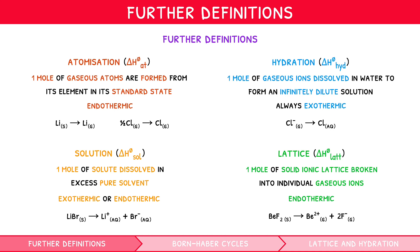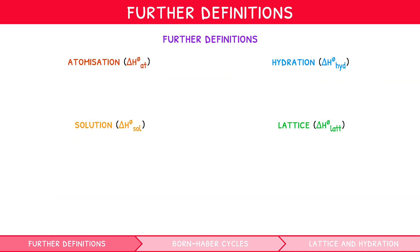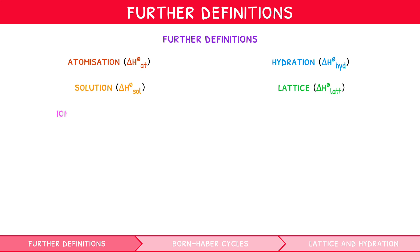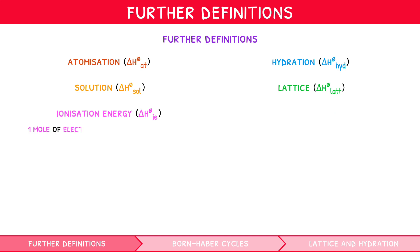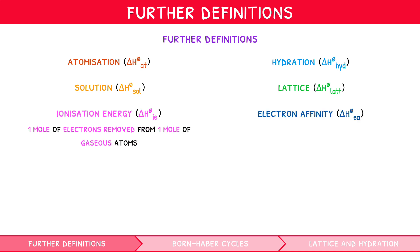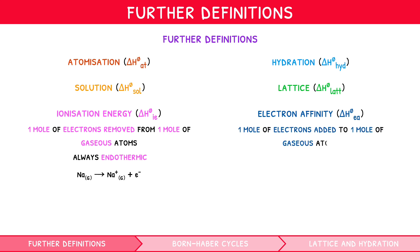Two concepts from topic 3 also appear here with additional information: ionisation energy and electron affinity. Ionisation energy is the enthalpy change when one mole of electrons are removed from one mole of gaseous atoms — it is always endothermic. For example, Na → Na⁺ + e⁻. Electron affinity is the enthalpy change when one mole of electrons is added to one mole of gaseous atoms — it is usually exothermic.